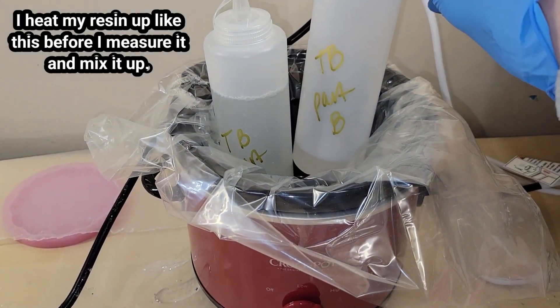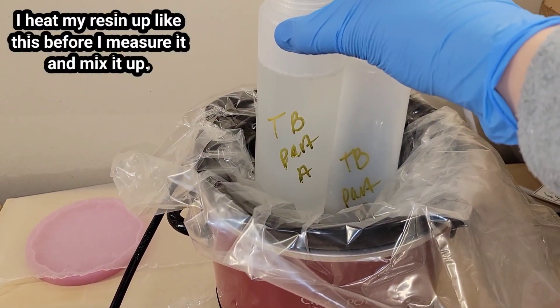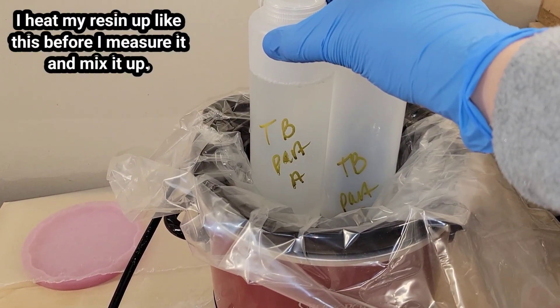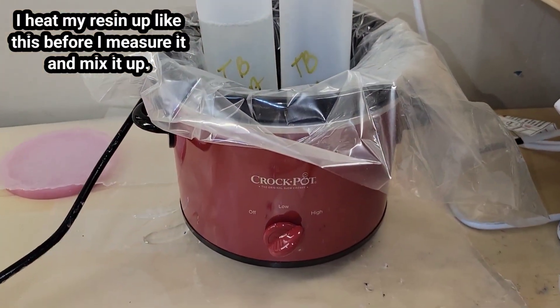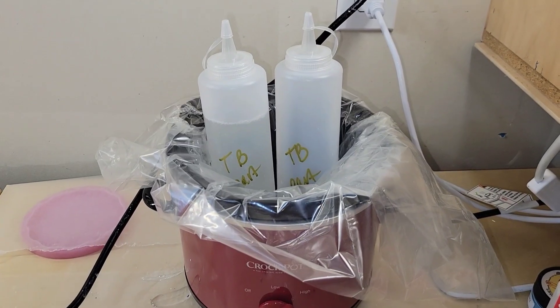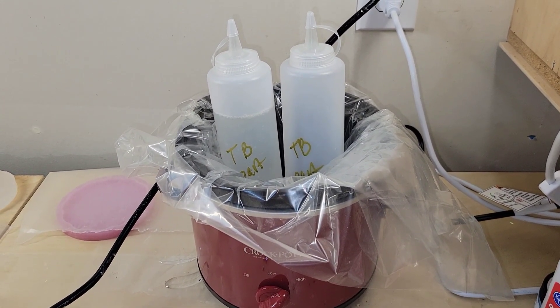Really quickly, I wanted to show you how I've been warming up my resin. This is Total Boat Tabletop Epoxy—that's the resin I'm using today. What I did was get two condiment bottles, label them, then put them in this little crock pot on high for about 15 minutes before I pour. That warms up the resin.